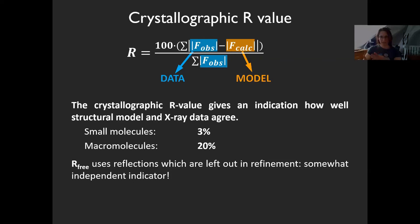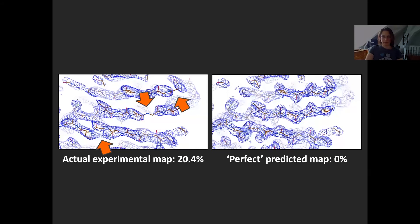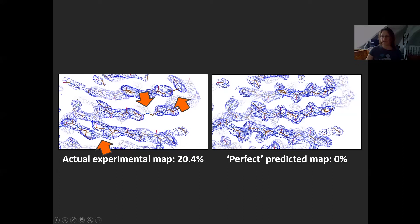Here's another example. What we would want but can't have is a perfect map — that would be an R value of zero. If we calculate the map with a model that is not perfectly fitting the data — for example 20.4% — you get artifacts. The backbone density is not consecutive, there are some gaps, and two points are merged. So it's not great.